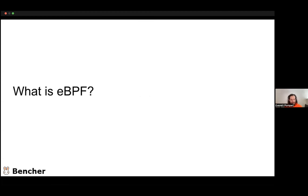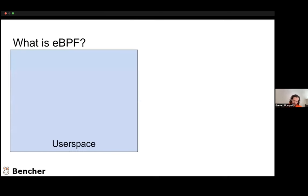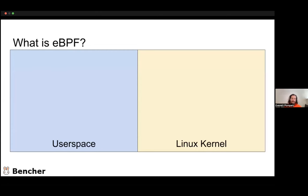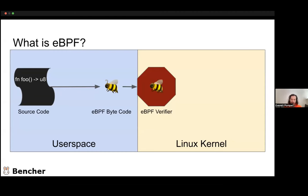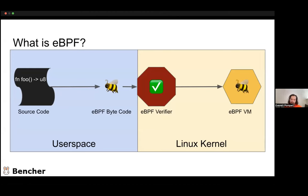So what is eBPF? Kind of start off with all the buzzwords in the title there. eBPF — if you think about it conceptually, you have user space and kernel space. You take your source code and compile it down to eBPF bytecode. That gets handed over to the kernel side and put into the eBPF verifier, which basically makes sure it can solve the halting problem essentially. As long as that checks out, it moves it to the eBPF VM inside the kernel. There are a lot of restrictions on that VM and how that verifier works, and we'll talk about that more as we go through.